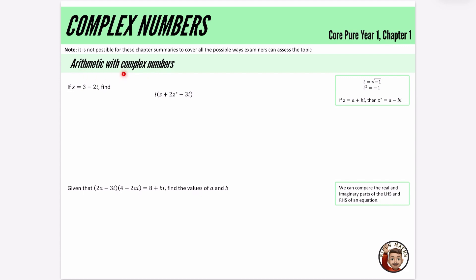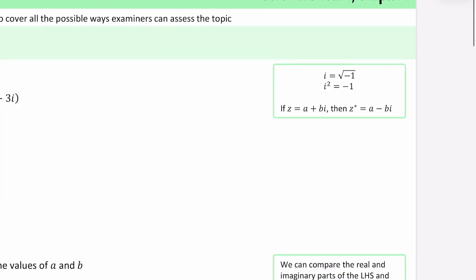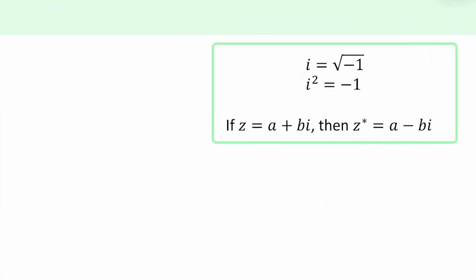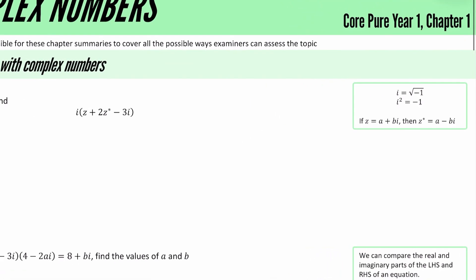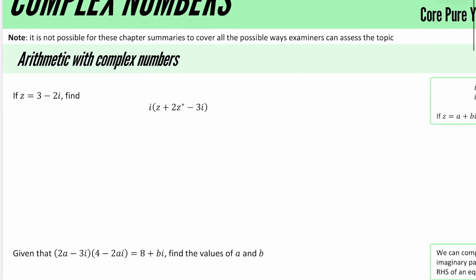For complex numbers, we will start off with some arithmetic with complex numbers. We obviously have some very basic things that we know about, that i is the square root of minus one, so i squared is therefore minus one, and we know that if we have z as equal to a plus bi, then z star, which is the conjugate of z, is a minus bi.